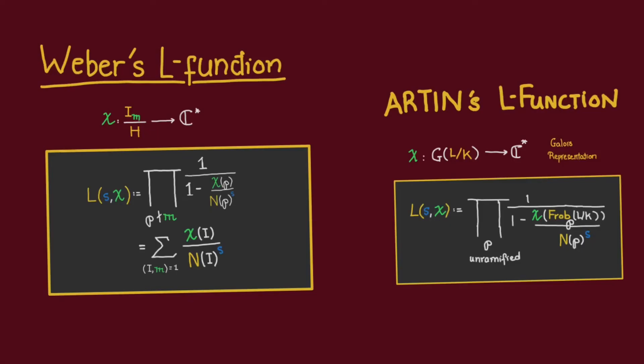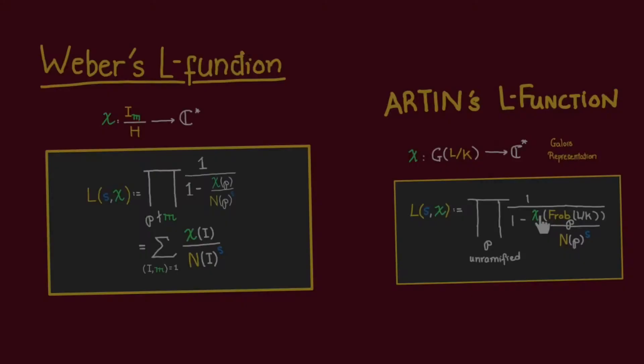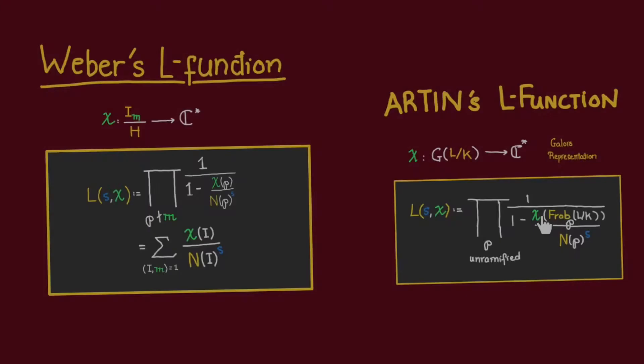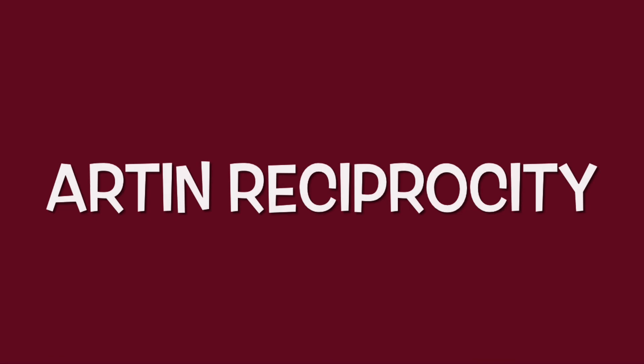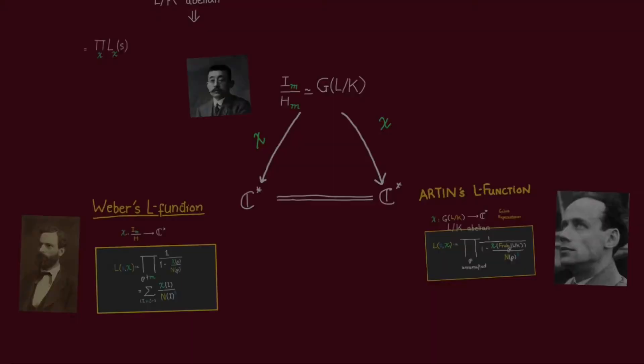Let us compare that with Weber's L function. Observe that instead of chi of prime ideal P, here in Artin's L function, we have the term chi of Frobenius P. So the situation now is that we have two types of L functions. One is for characters on generalized ideal class group, and the other is for characters on the Galois group of L over K.